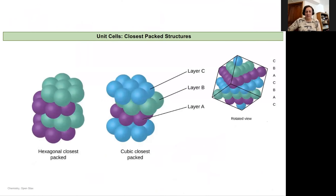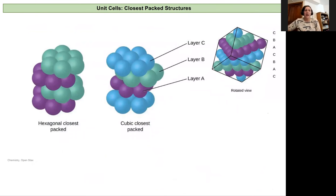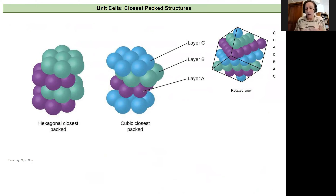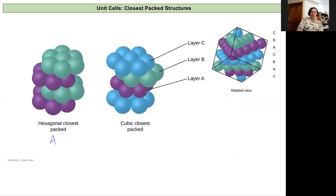Let's take a closer look at these close-packed structures to help visualize them. When working with 3D structures, it can be really difficult to visualize for some people, and for others it comes very naturally — so if it doesn't come naturally, don't be frustrated. This is a comparison of our hexagonal close-packed and our cubic close-packed. The ABA arrangement is for hexagonal close-packed, and the ABC pattern is for cubic close-packed or face-centered cubic.